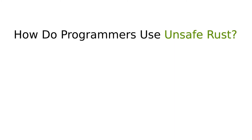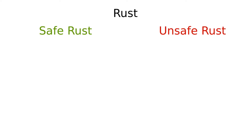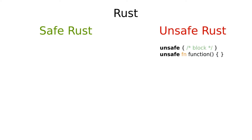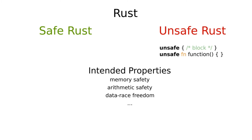First, let's have a look into what is unsafe Rust. Rust is a programming language that can be viewed as composed of two sub-languages: safe Rust and unsafe Rust. Safe Rust is the default and you can temporarily switch to unsafe Rust by using the unsafe keyword.